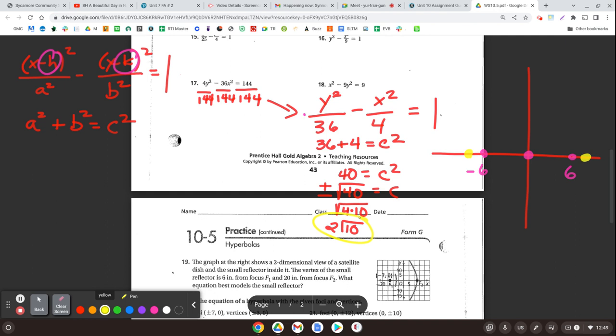Those are those points. So your foci are going to be negative 2 radical 10 comma 0 and positive 2 radical 10 comma 0. And that's how you find the foci.